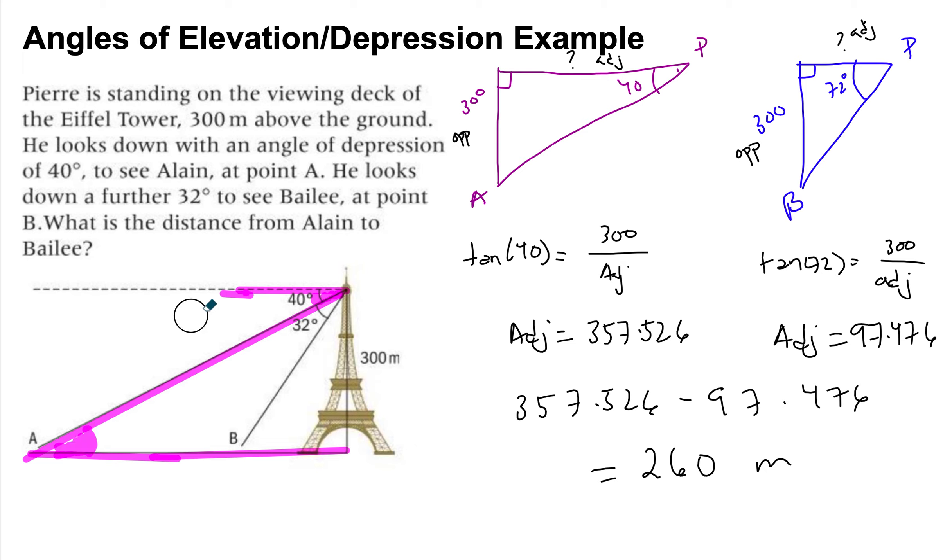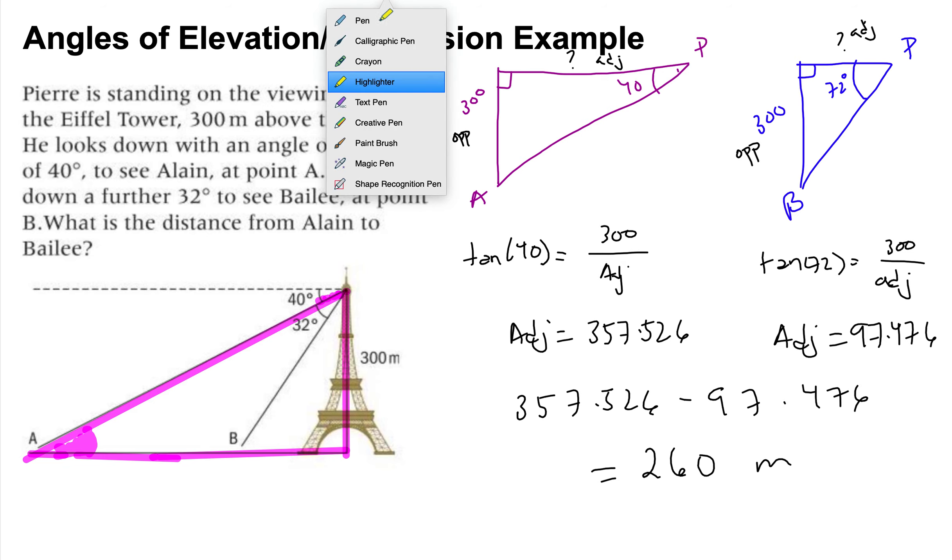So the Z I create here is telling me that this 40 degrees is the same as the 40 degrees here. So actually I can take a different triangle. Instead of this triangle, I can take this triangle instead.